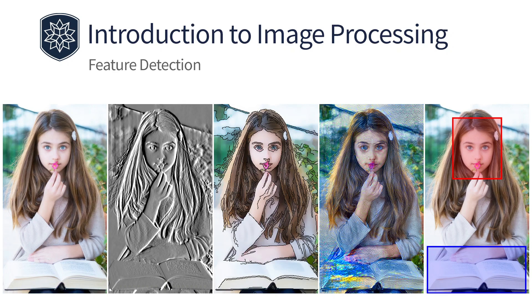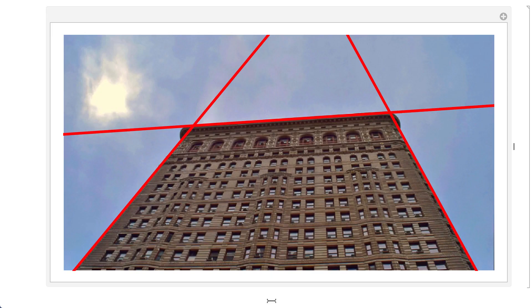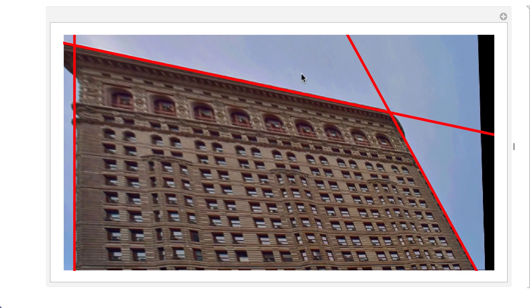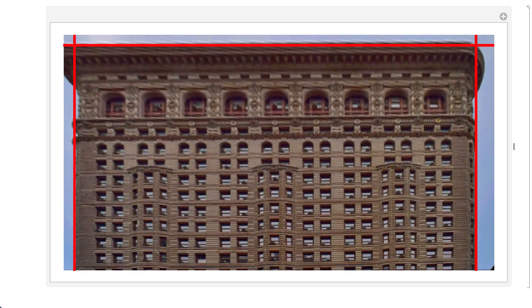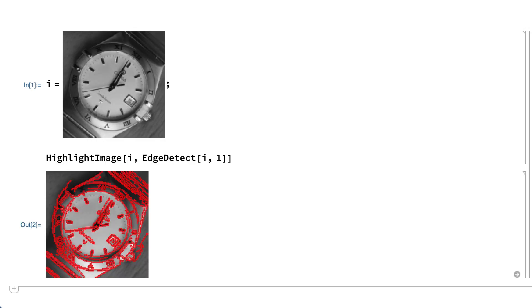Welcome to Section 10 of Introduction to Image Processing. This section is about methods for detecting features in an image. A feature can be just about anything in the image that is useful to know about for some application. For example, the edges around the building in this image are a feature that is useful for removing perspective distortion. Here is another image where the edges are features useful for identifying the object as a clock face on a watch, for determining the positions of the hands on that clock, or for determining the position of the clock face within the image.